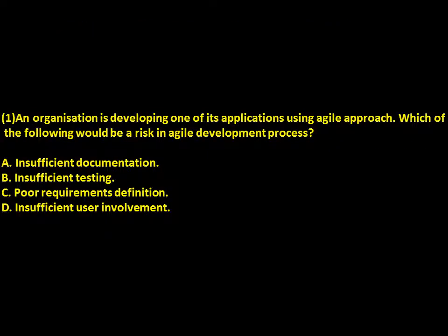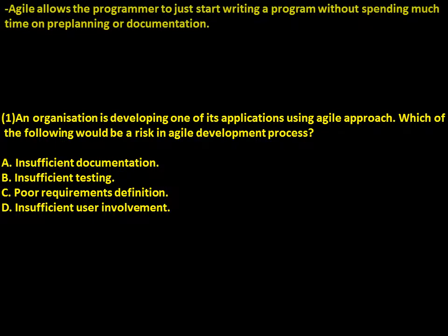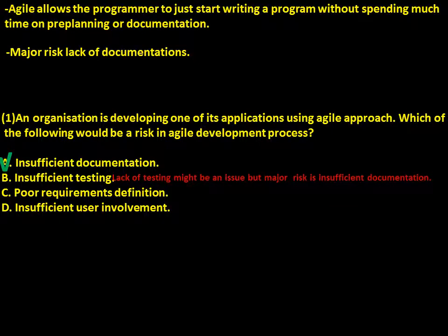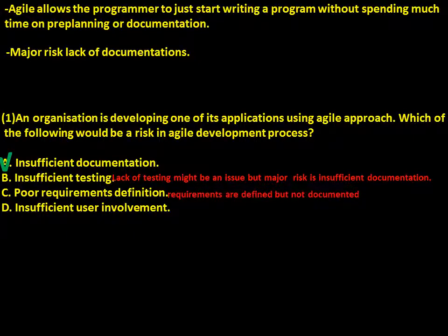Let us discuss some SESA questions. An organization is developing one of its applications using the Agile approach. Which of the following would be the risk in the Agile development process? Remember, Agile allows the programmer to just start writing a program without spending much time on pre-planning or documentation. So the major risk is lack of documentation. Lack of testing might be an issue, but the major risk is insufficient documentation. Requirements are defined though not documented.